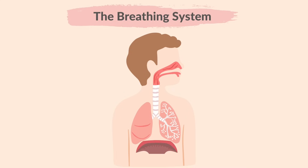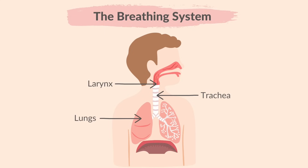Now let's identify the parts of the breathing system. This is the larynx, the area containing the vocal cords. This is the trachea or windpipe, which connects the throat to the lungs. These are the lungs, which are the main organs in the respiratory system, containing the surfaces where gas exchange takes place.